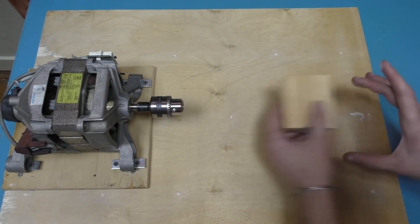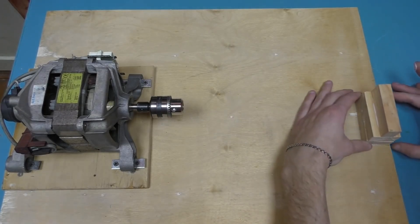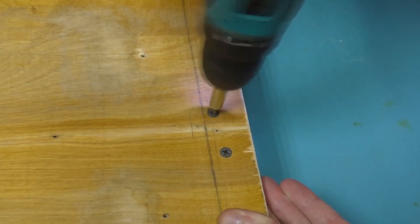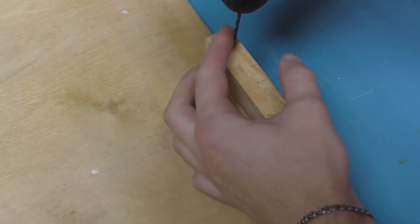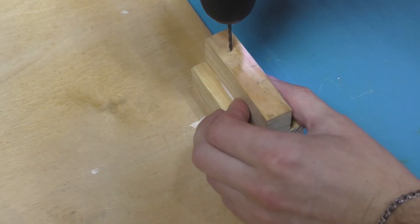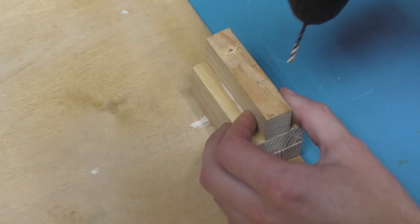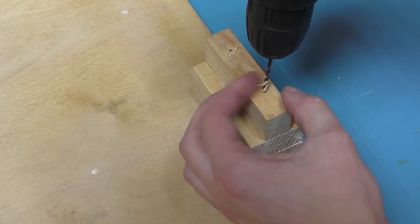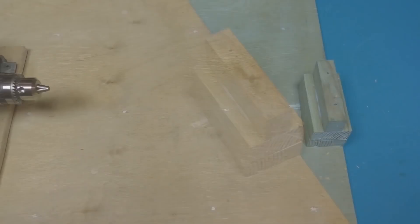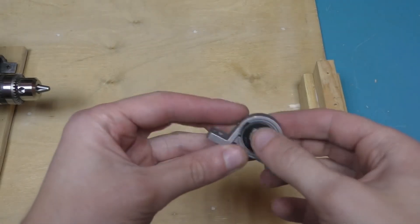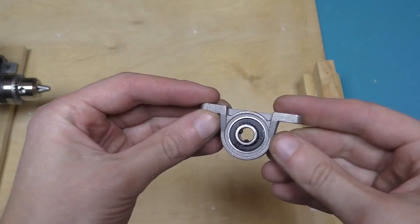In the same way, attach this piece to the edge of the plywood, just so that it is opposite the chuck. Let's drill two holes in it. Now, let's take a thrust bearing with an inner diameter of 8 millimeters and secure it.